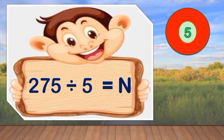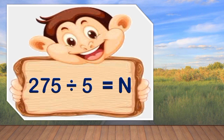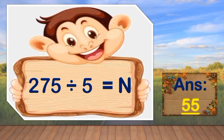Number 1. 275 divided by 5 is equal to N. You are given 5 seconds to answer this. You may now start. Go! Time is up. And the correct answer, children, is? Very good! It's 55.